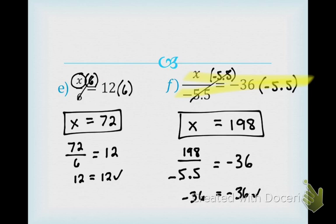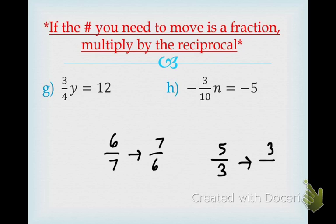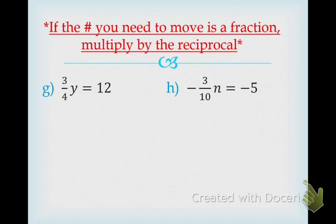This tells us if the number you need to move is a fraction, you're going to multiply by the reciprocal. Do you remember what a reciprocal is? It's when you flip a fraction. If I had 6/7ths, the reciprocal is 7/6. If I had 5/3rds, the reciprocal is 3/5. So all you're doing is flipping the fraction. Now, 3/4 times y equals 12. What is not allowing y to be by itself? Multiply by 3/4. Instead of just dividing by 3/4, do you guys remember KFC? Keep the first, flip the second, change the sign. When you divide by 3/4, you are actually multiplying by 4/3.